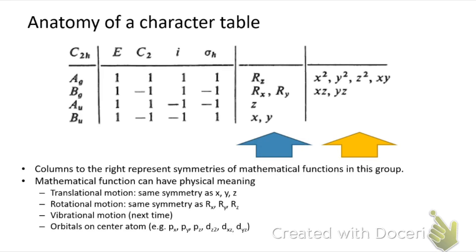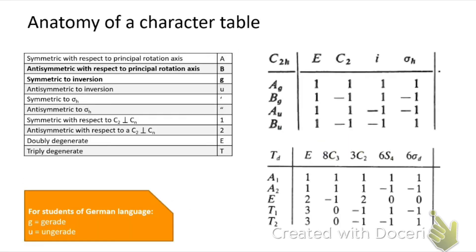We can give those mathematical functions physical meanings that relate to chemistry. For example, translational motion has the same symmetry as x, y, or z — so translational motion in the x direction has the same symmetry as f(x) = x. Rotational motion has the same symmetry as Rx, Ry, and Rz. We'll talk more about vibrational motion next time, and also about which orbitals can overlap to make a bond.